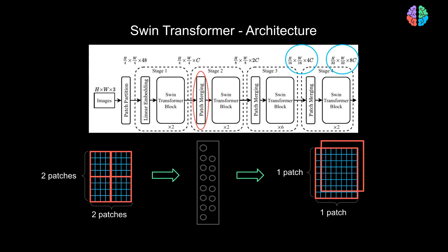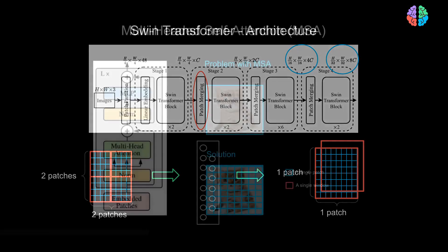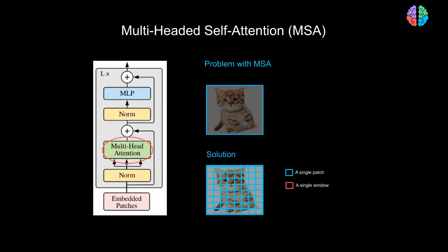Before looking into the Swin Transformer block which modifies the multi-headed self-attention, let's look at the problem with multi-headed self-attention in Classic Transformer. Multi-headed self-attention is a standard attention mechanism in Transformers. It works really well for language processing tasks, but images are different.